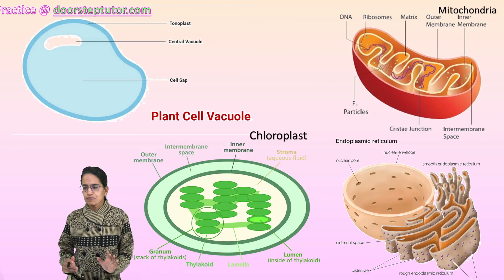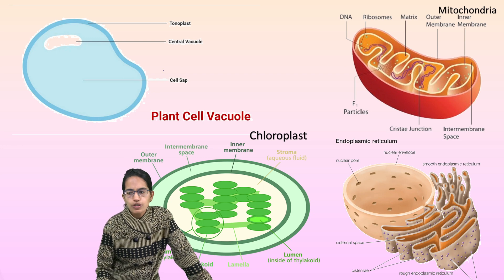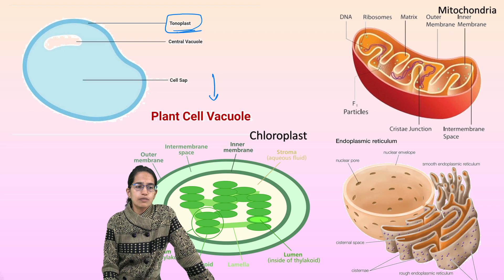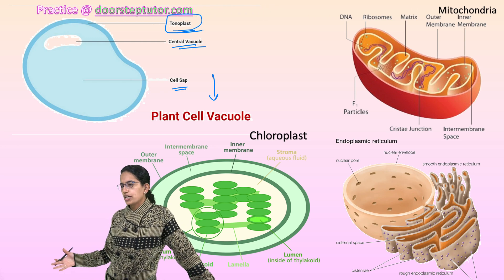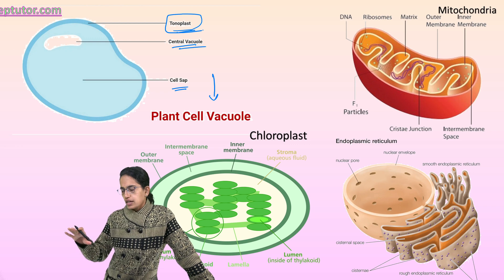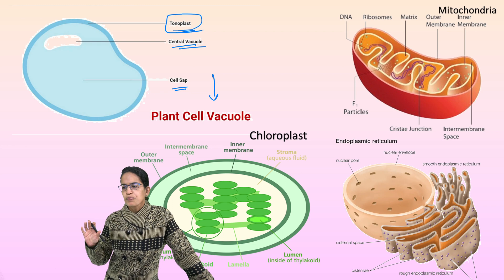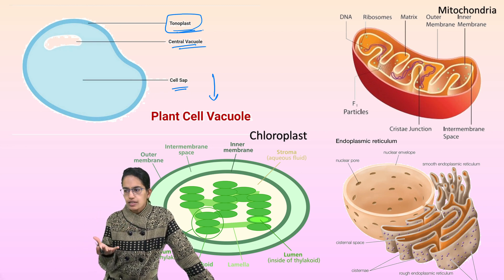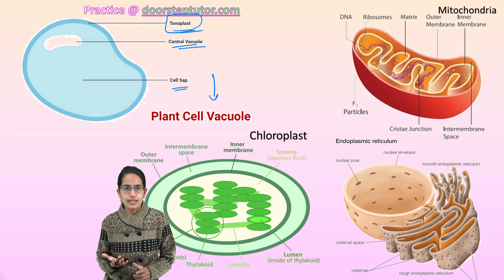Now the four important cell organelles. First: the vacuole. The outermost layer of the vacuole, the membrane of the vacuole, is called the tonoplast. There is a central vacuole and cell sap filled with water, sugar, and minerals. In plants the vacuole is large; in animals it is small and separated. The functions of the vacuole: it helps keep the cell turgid, stores food material if required, and also helps in digestion and water balance of the cell.